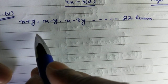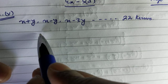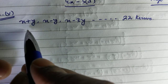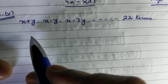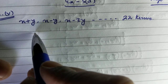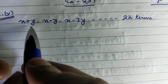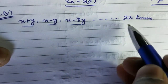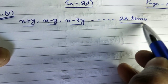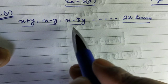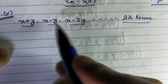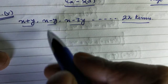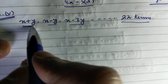This is the question from Exercise 5D of the chapter Arithmetic Progression, question number 1. In this question we need to find the sum of all the terms — this is the first term, this is the second term, this is the third term, and so on till the 22nd term. We need to find the sum after adding all the terms till the 22nd term.